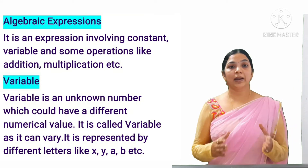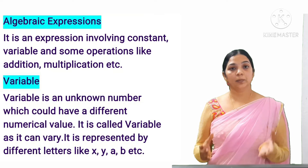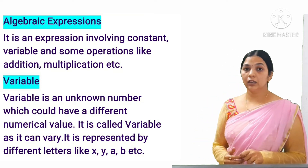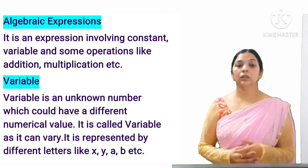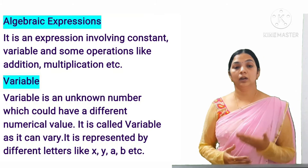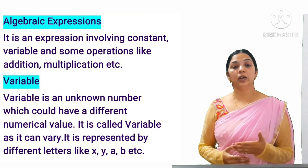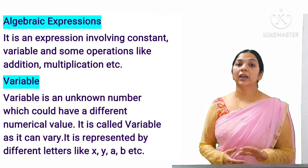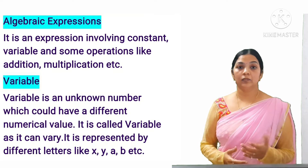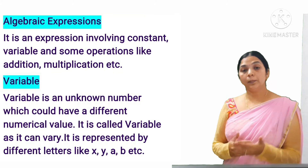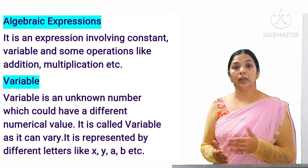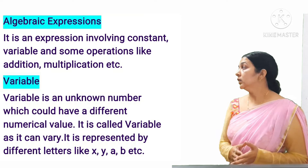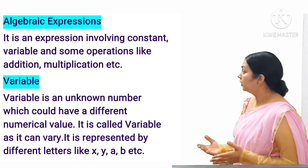Combining these three things makes an algebraic equation. Now, what are variables? A variable is an unknown number which could have a numeric value — it is called a variable because it can vary. Its value keeps on changing and it affects the whole expression.